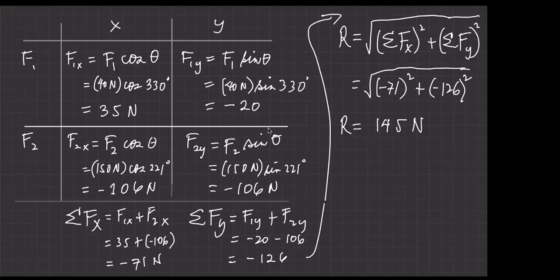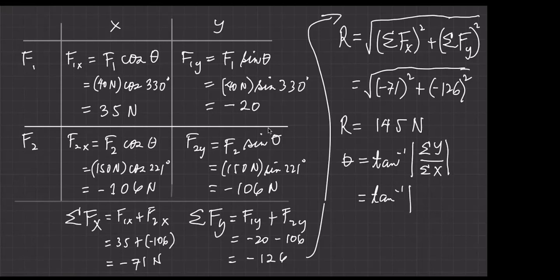But we're not finished, because the resultant must also have a direction. To compute the direction: theta equals inverse tangent of the absolute value of (summation of Fy) divided by (summation of Fx). Substituting: inverse tangent of 126 over 71. Use absolute values, so the sign doesn't matter here. Using your calculator, the answer is approximately 60 degrees.